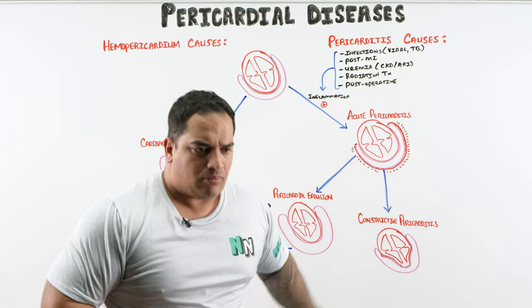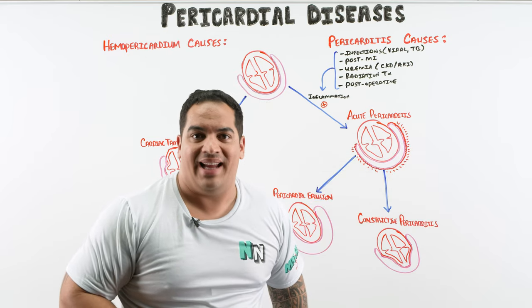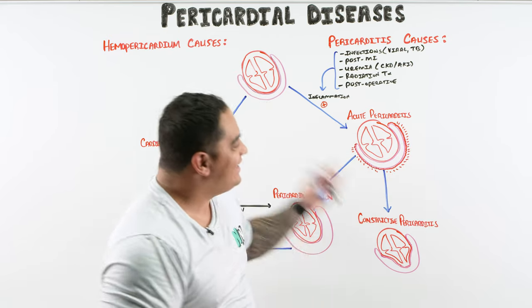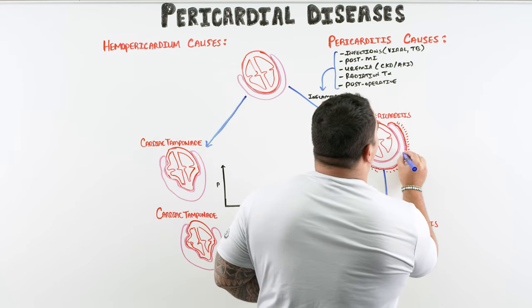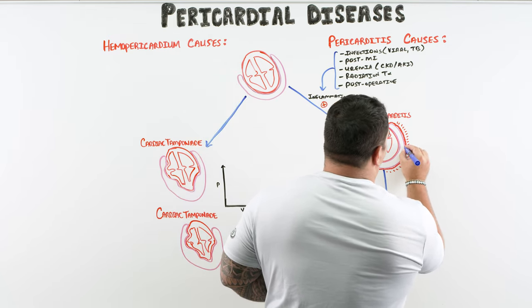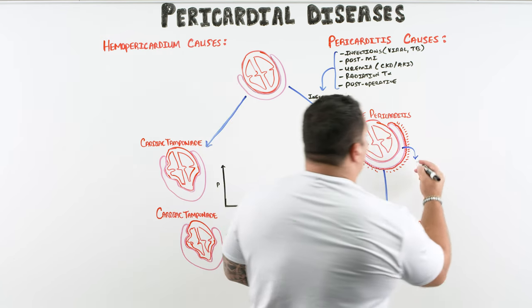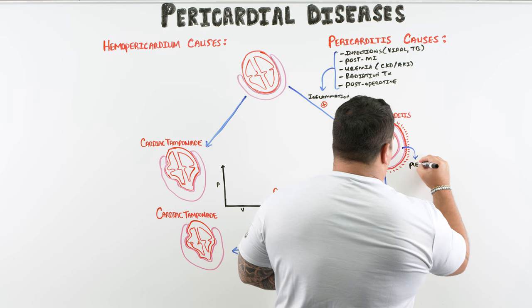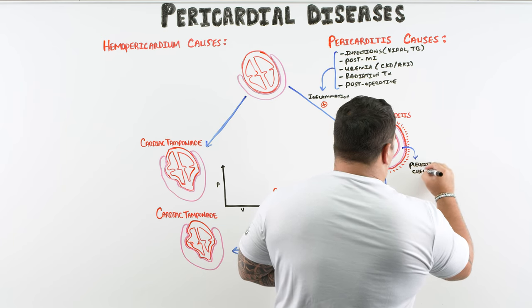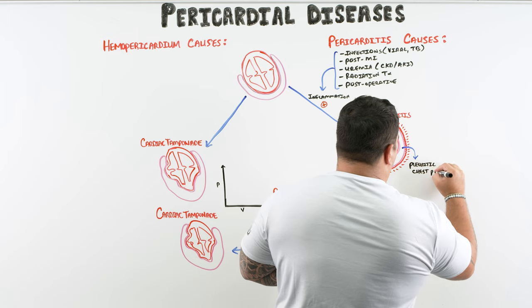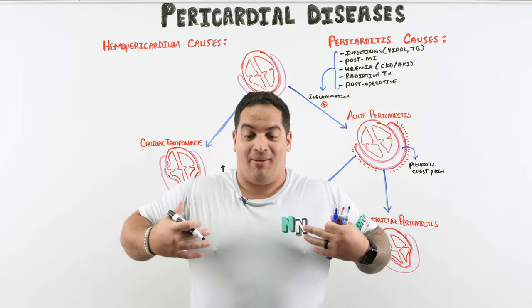Whenever the pericardium becomes inflamed it generally precipitates chest pain — by far the hallmark feature of acute pericarditis. This is called pleuritic chest pain.